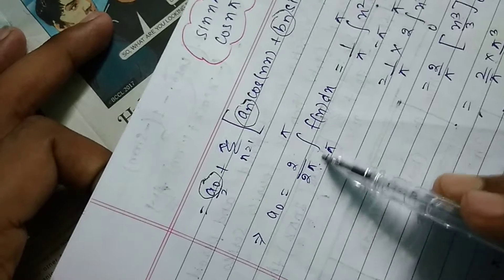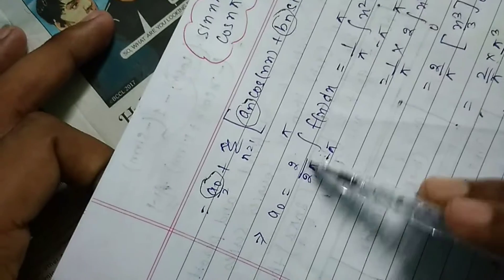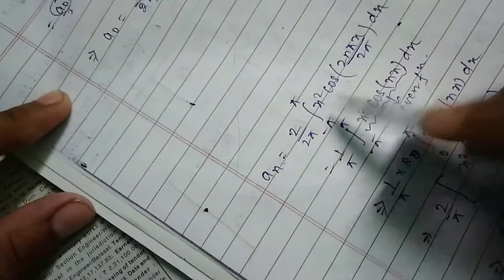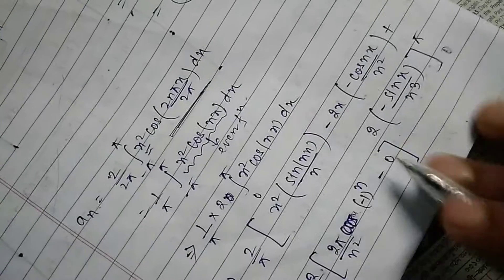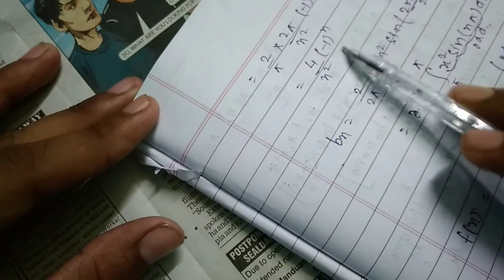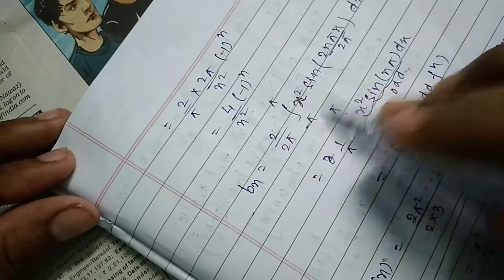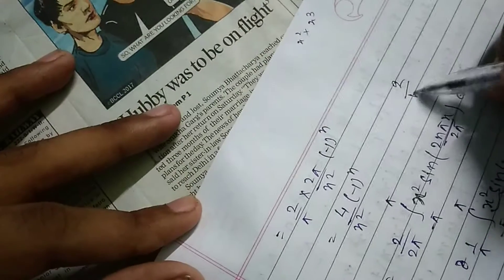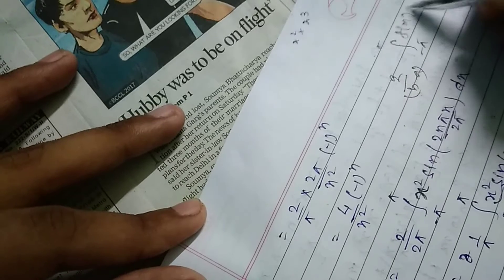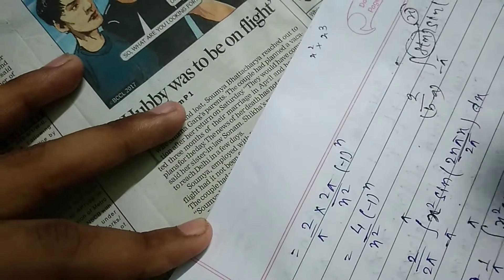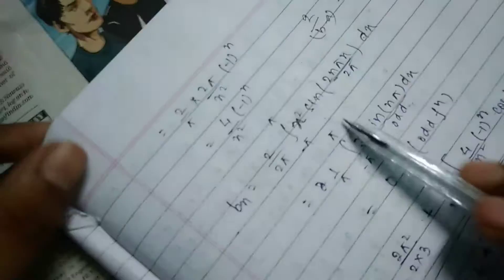For f(x) = x² on [-π, π]: a₀ = (2/2π) · integral from -π to π of x² dx — performing the integration, the result is 2π²/3. Similarly, aₙ = (2/2π) · integral of x²·cos(nx) dx gives 4(-1)ⁿ/n². For bₙ, we integrate x²·sin(nx), but x²·sin(nx) is an odd function, so the integral over [-π, π] is zero.